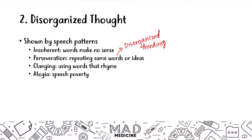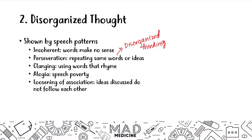Another thing patients can have is a loosening of association, where ideas they're talking about do not follow each other — they're not really connected. An example would be: 'Yesterday I was walking down the street and the fire hydrant in the sky had some leaves that were creamy and the peanut butter was made out of coffee.' That makes no sense — that's disorganized thought and speech at the same time.